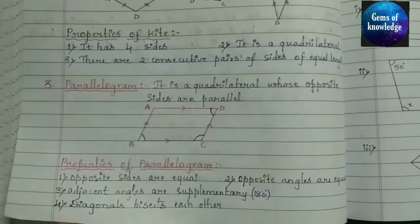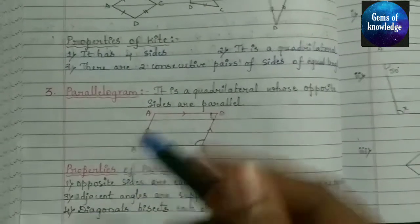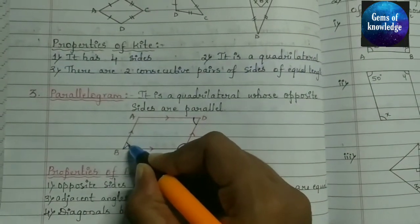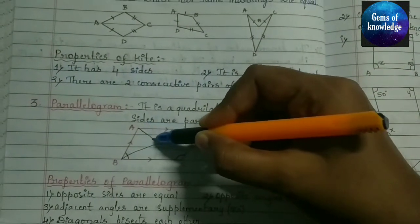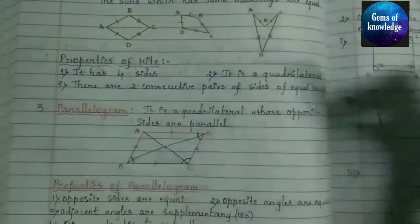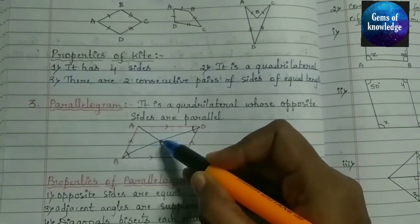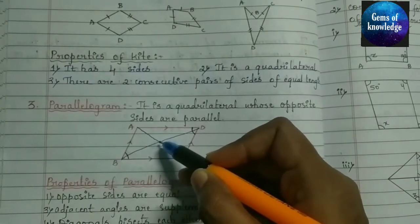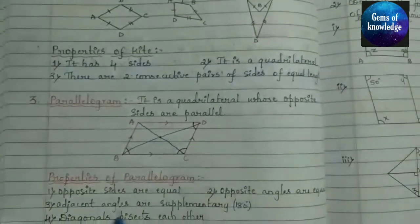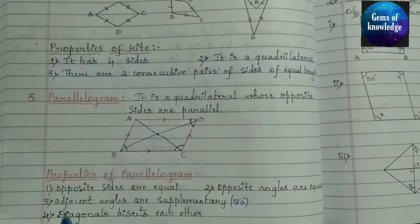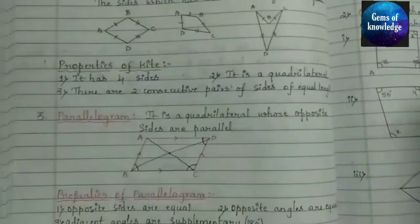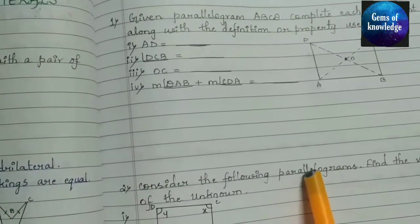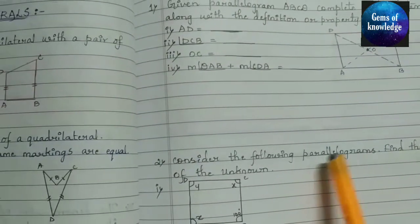The fourth property is that diagonals bisect each other. You can see one diagonal and another diagonal — both diagonals are bisecting each other. Bisecting means they meet at a point and cross over each other. Depending on all these properties, we have to solve exercise 4.3 from the textbook on Understanding Quadrilaterals.